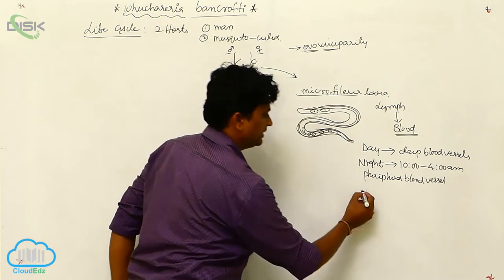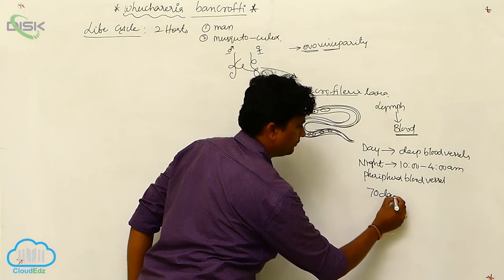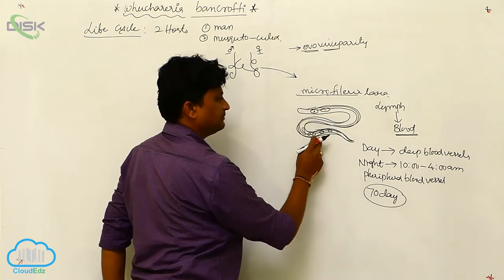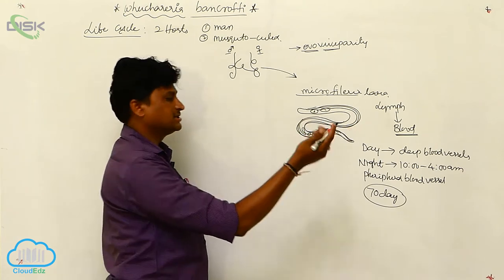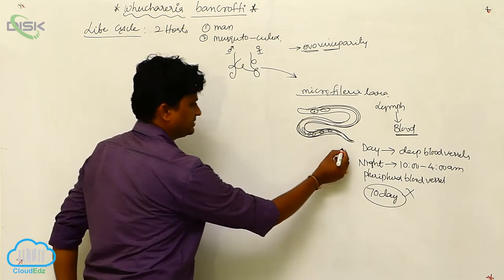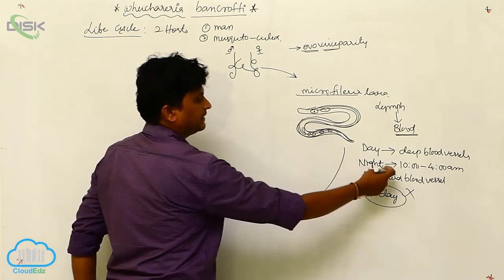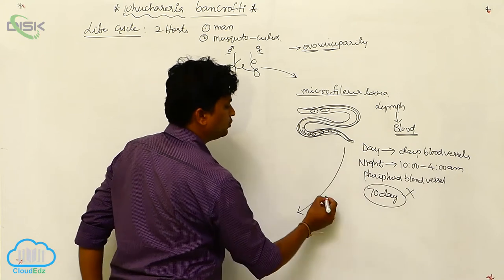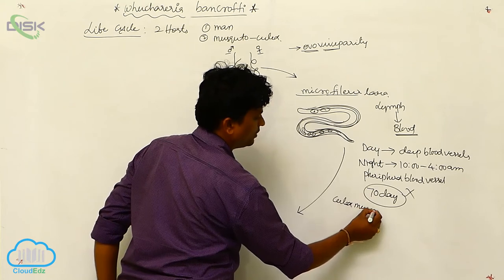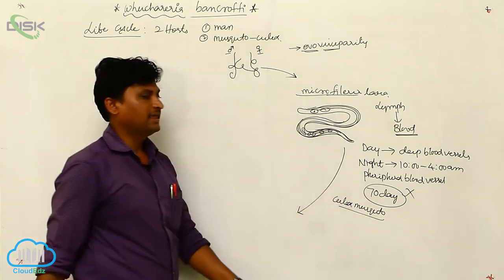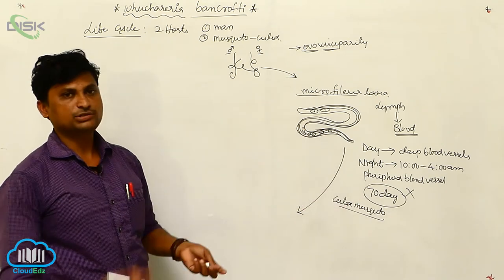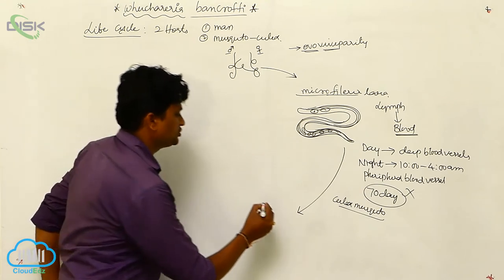Microfilaria can live for up to 70 days. If they do not reach a mosquito within 70 days, they die. During the night from 10 PM to 4 AM, when the Culex mosquito bites an infected person, the microfilaria larvae enter the mosquito. They first reach the labium and finally reach the midgut.